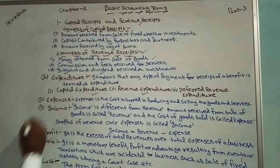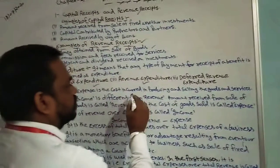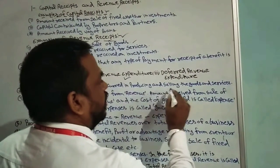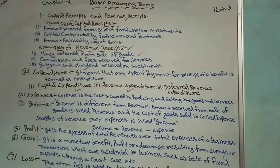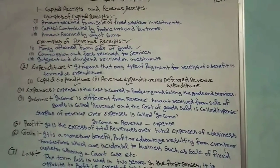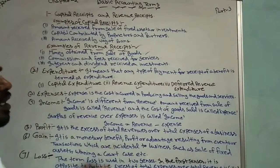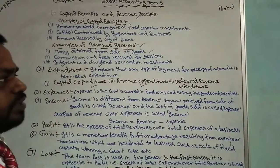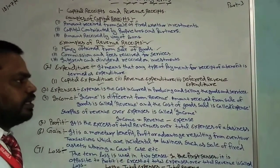The next point is expenses. Expenses is the cost incurred in producing and selling the goods and services. Expenses are those costs that are incurred for the purpose of producing goods, selling goods, and providing services — that is called expenses.